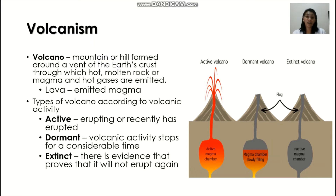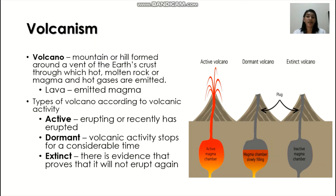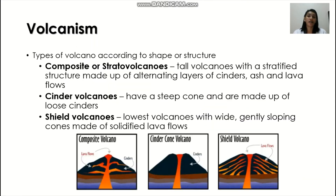Active volcanoes are erupting or have recently erupted, like the Taal volcano. Dormant volcanoes are those whose activity has stopped for a considerable time. And for extinct volcanoes, there is evidence that proves they will not erupt again.